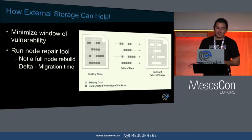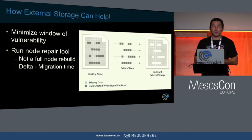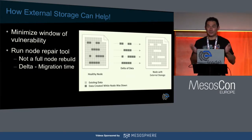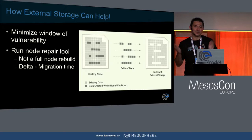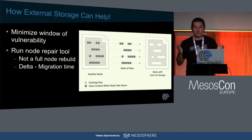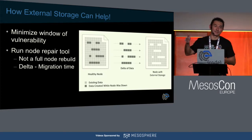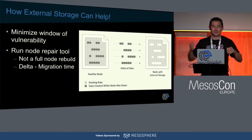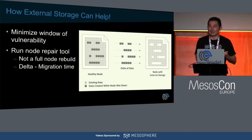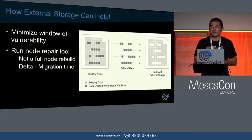Think about a network partitioning event, which could be transient — maybe two, fifteen, or thirty minutes of connectivity problems. The last thing you'd want to do is trigger a full rebuild of a Cassandra node, copying data everywhere, only for that node to come back online fifteen minutes later — especially when a bootstrap and repair operation can take fifteen days.